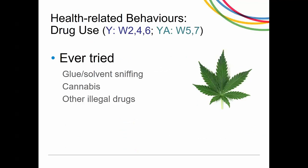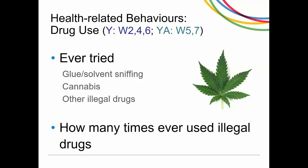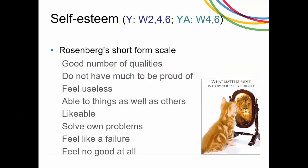Here are drug use behaviors asked of both groups. Both are asked whether they've ever tried glue or solvents, cannabis, or other illegal drugs, and if they have, how many times they've ever used these illegal drugs. On even-numbered waves, they are given the Rosenberg short-form self-esteem scale — eight items that can be added up to give a total score.